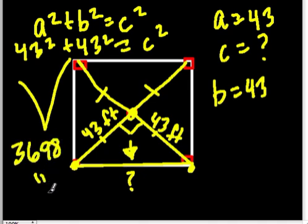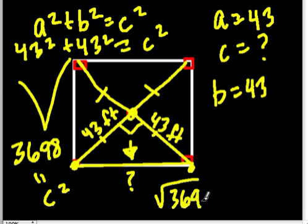And that's what c squared is. But c is not that. c is the square root of that. So c is the square root of 3698. Don't rush and say that it's 3698—that wouldn't make any sense. If this is 43 feet from here to here, it doesn't make sense for this distance to be almost 4,000.